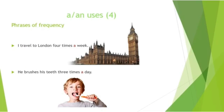The fourth use of 'a' or 'an' is in certain phrases of frequency. 'I travel to London four times a week' — this means I regularly go to London four times during a week. Notice we use the article before a time period. Another example: 'He brushes his teeth three times a day' — here 'a day' uses the indefinite article.